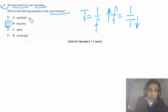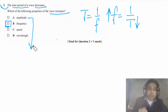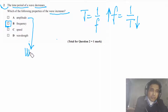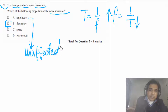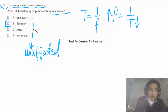Let's understand why the answer is not A. The amplitude of a wave is not affected by time period — amplitude is unaffected by time period. So amplitude stays the same whether time period increases or decreases; there is no effect on amplitude.